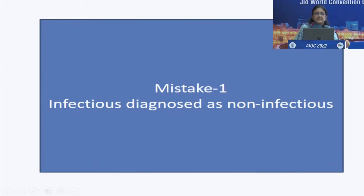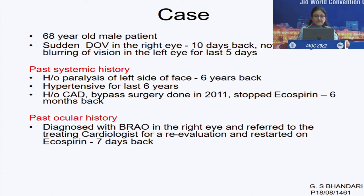First mistake — diagnosing an infectious etiology as non-infectious. A 68-year-old male presents with sudden diminution of vision in the right eye 10 days back and now blurring of vision in the left eye for last five days. He has a history of paralysis of the left side of the face, is hypertensive for six years, and has a history of CAD with bypass surgery done in 2011.